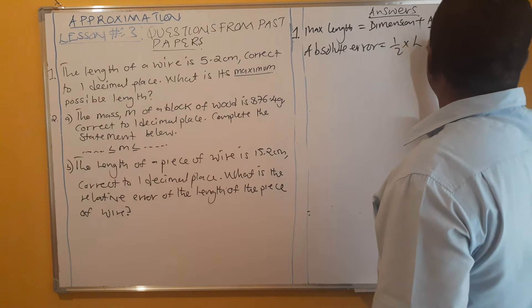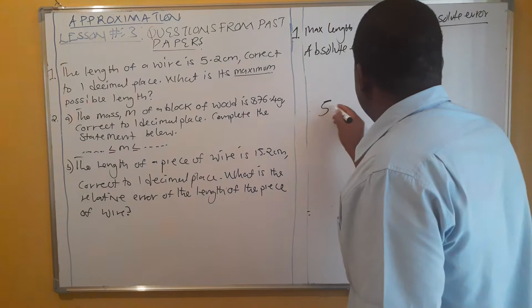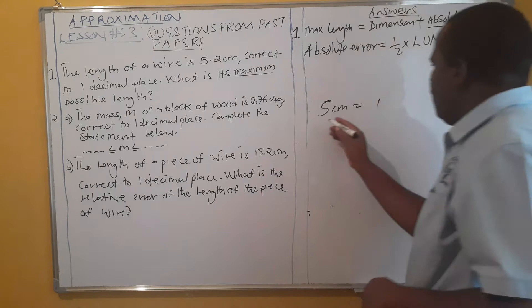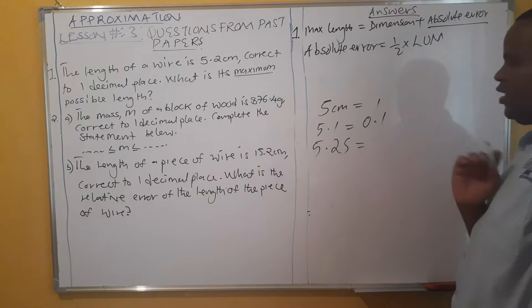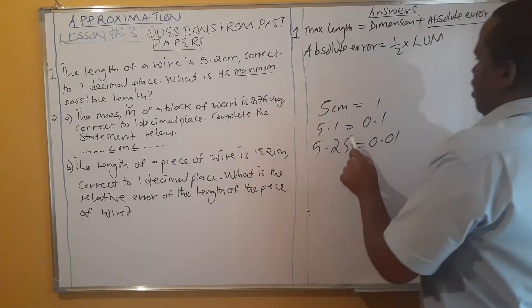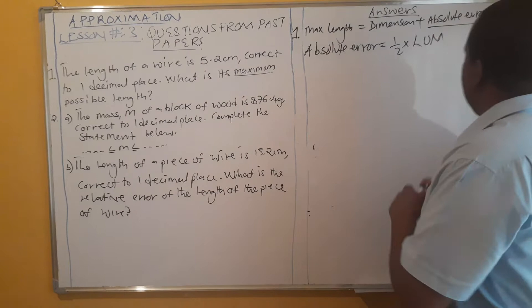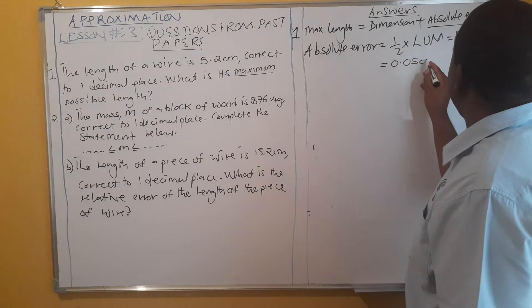The least unit of measurement: for any whole number, say five centimeters, the least unit of measurement is one. If you have 5.1, it is 0.1. If you have 5.25, with two decimal places, it will be 0.01. Now, looking at 5.2 — it has one decimal place, so the least unit of measurement is 0.1. Therefore, the absolute error equals half times 0.1, which gives us 0.05 centimeters.